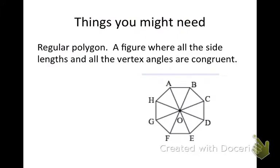Some of the things that you might need when you're looking at your homework is some vocab about polygons. When you see the word regular, like a regular triangle, a regular octagon, what that means is a figure where all the side lengths and all the vertex angles are congruent.